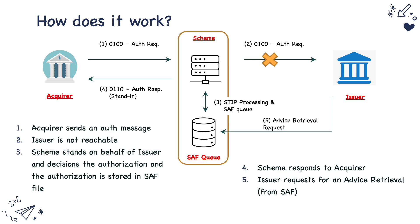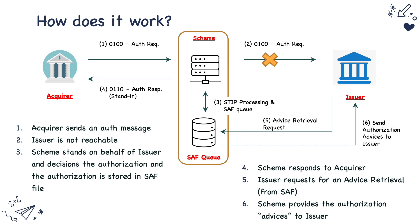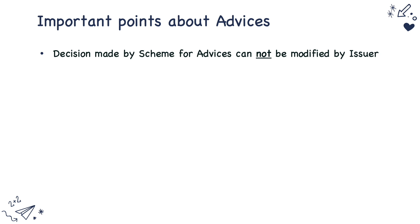This is an important step. Once the issuer is up and running, the issuer requests an advice retrieval message — an administrative 800 message — to the schemes. Schemes then forward all the authorization advices it decided on the issuer's behalf. The key thing here is that an advice is a message where the scheme has already taken a decision on behalf of the issuer, so the advice message response cannot be modified by the issuer. Once it stands as an approval or decline, the issuer has to accept it as-is. When the issuer receives a 120 message, the DE39 response code cannot be edited before being sent back to schemes.